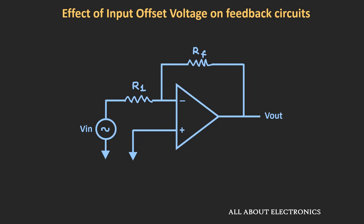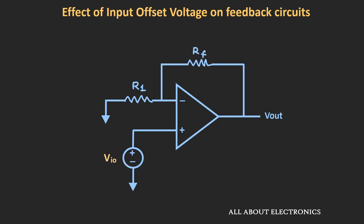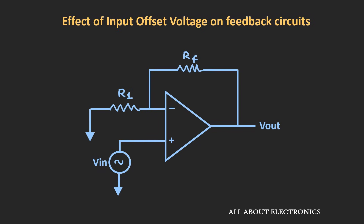Now let us see the effect of input offset voltage on feedback circuits. Here we have an op-amp configured in an inverting configuration. To find the effect of this input offset voltage, let us assume the input provided to this circuit is 0V. In this case, some input offset voltage will be present between the two terminals, and this can be represented by applying the input offset voltage at one of the terminals — here, at the non-inverting terminal. The circuit looks identical even for a non-inverting op-amp configuration when the input voltage is considered as zero.